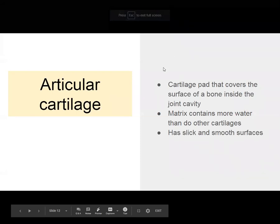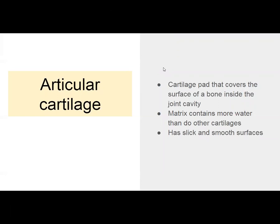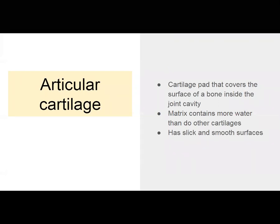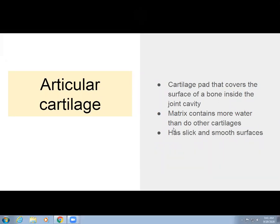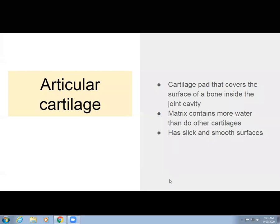The articular cartilage is a cartilage pad that covers the surfaces of your bones inside the joint cavity. The matrix in the articular cartilage has more water than most other cartilages, and the surfaces are smooth and slick.